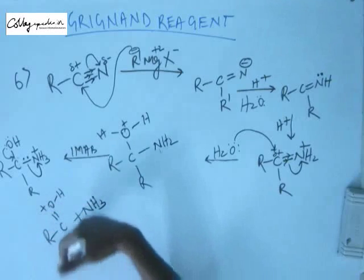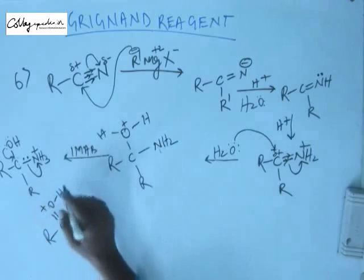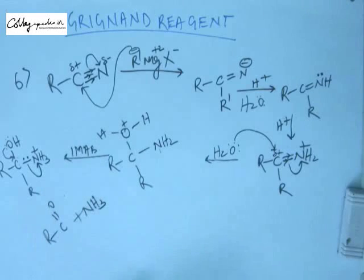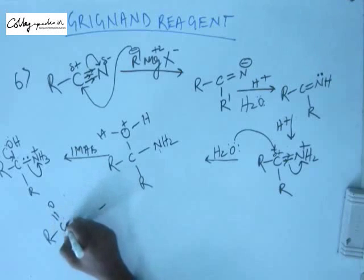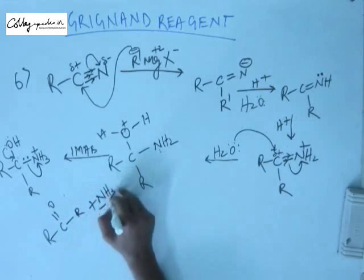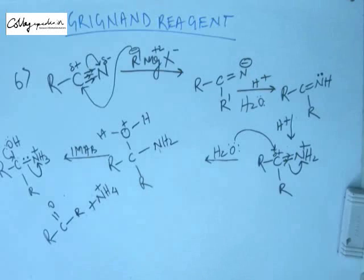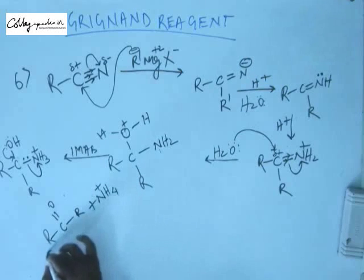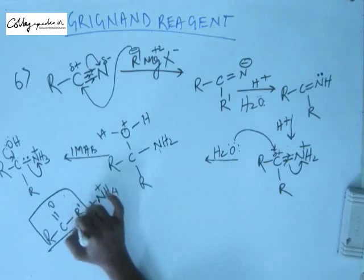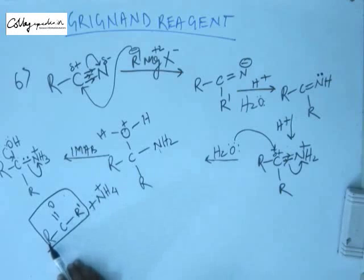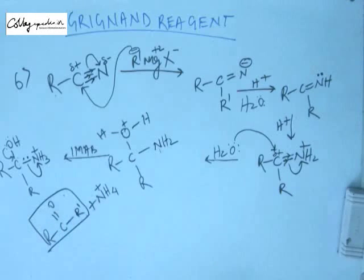This becomes neutral just by removal of H+ from the oxygen. Anything present in the system — water or any other base — will take away this H+, making the C=O neutral, and ammonia gas will be released. If there are more H+ in the system, it will exist as NH4+; otherwise it will exist as NH3. The final product is a ketone, where one R group comes from the Grignard reagent (represented as R') and the other R group is the same as was in the cyanide.